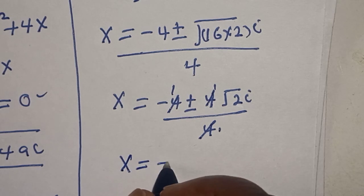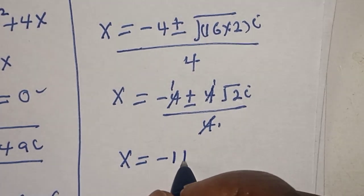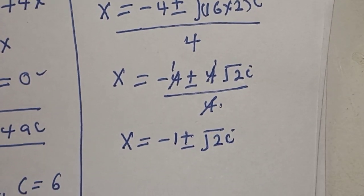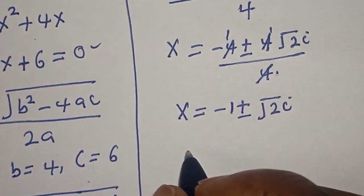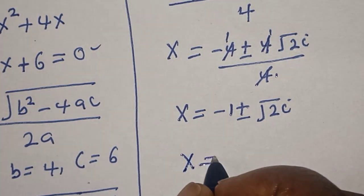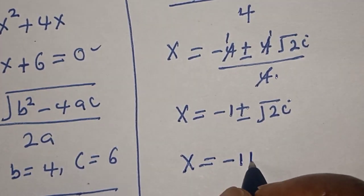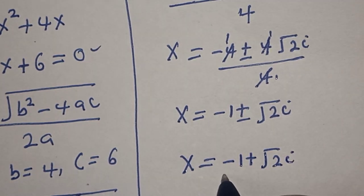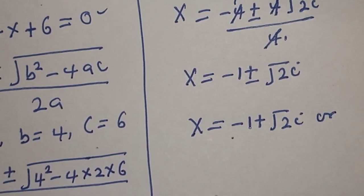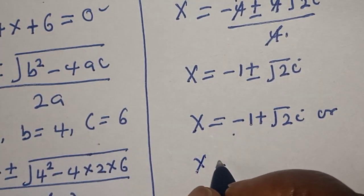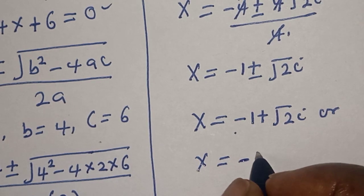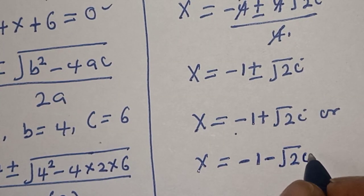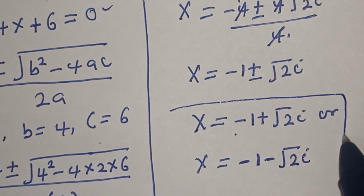Therefore, x is equal to minus 1, plus or minus square root of 32i, over 4. Then x is equal to minus 1 plus square root of 32i over 4, or x is equal to minus 1 minus square root of 32i over 4. So that is our final answer.